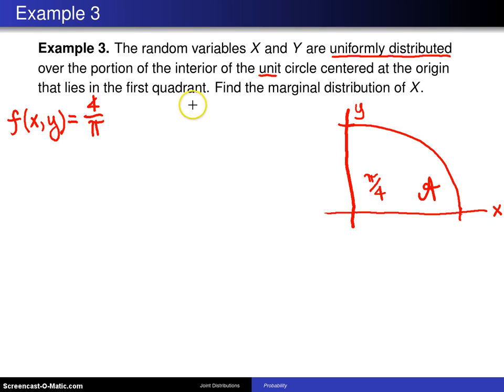So the support here will be x greater than 0, y greater than 0 that puts us in the first quadrant. Then we also want to indicate that x squared plus y squared is less than 1, and that is the easiest way to write our support script A here.